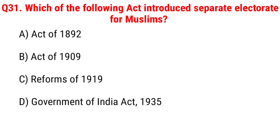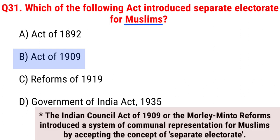Next question: which of the following acts introduced a separate electorate for Muslims? Option A, Act of 1892; B, Act of 1909; C, Reforms of 1919; D, Government of India Act 1935. The right answer is Option B, Act of 1909. The Indian Council Act of 1909, or the Minto-Morley Reforms, introduced a system of communal representation for Muslims by accepting the concept of separate electorate.